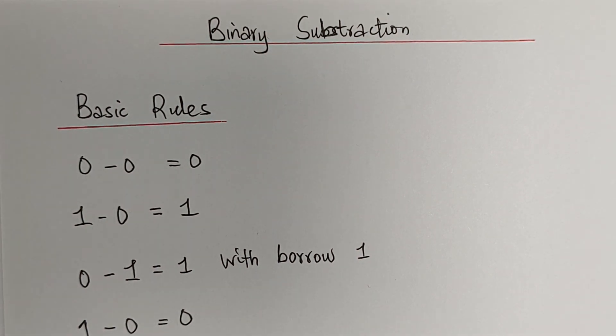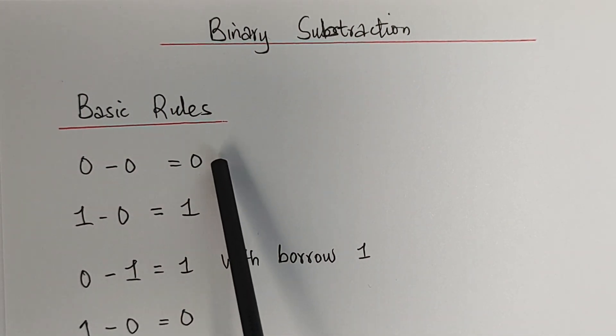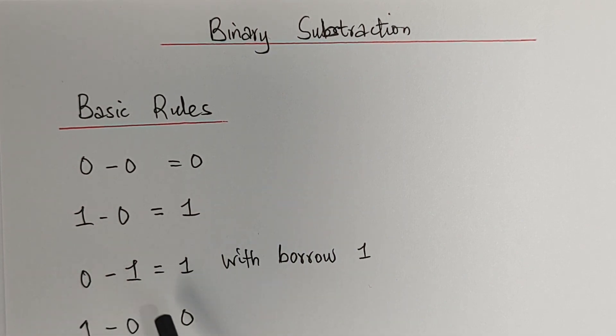Now, let's consider the basic rules of binary subtraction. 0 minus 0 gives us 0. 1 minus 0 gives us 1. 0 minus 1 gives us 1 with borrow 1, and 1 minus 0 gives us 0.